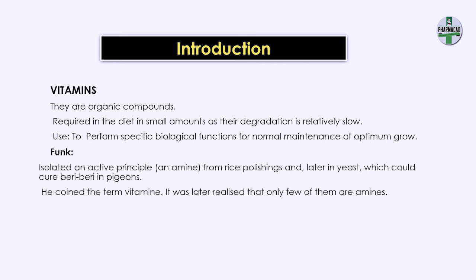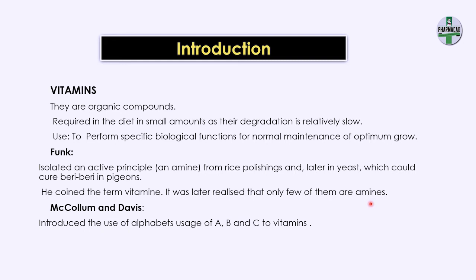A biochemist named Funk isolated an amine in rice polishing as well as yeast. He found out that this amine, which was an active principle, could cure beriberi in pigeons. He named them as vitamins, and it was later found out that not all vitamins have an amine in them. The use of alphabets such as A, B, and C to vitamins was assigned by a biochemist named McCollum and Davis.